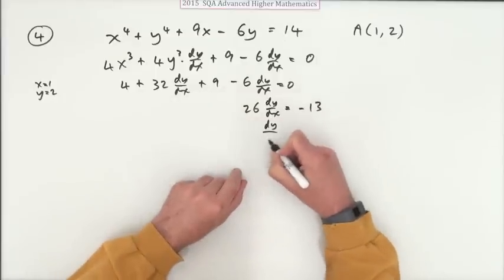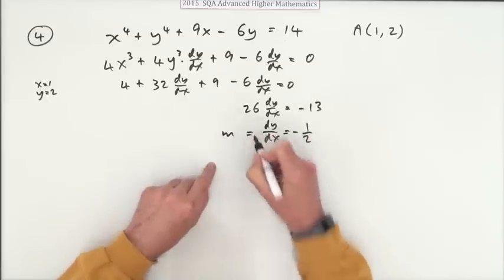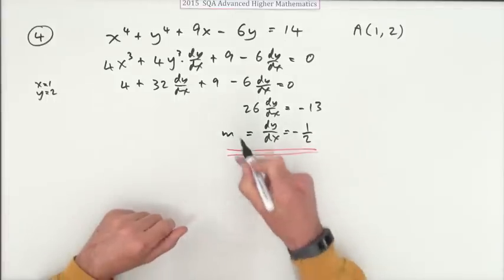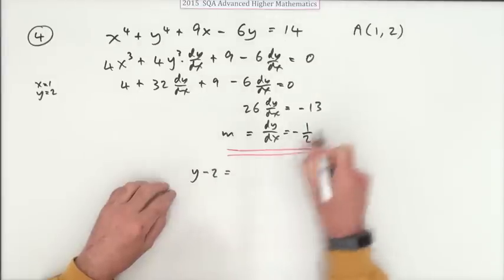So finally dy/dx is negative a half, and of course that's your gradient. Now just like the Higher, you've got the gradient, you've got a point on it, so it'll be y minus the y coordinate is the gradient times x minus the x coordinate.